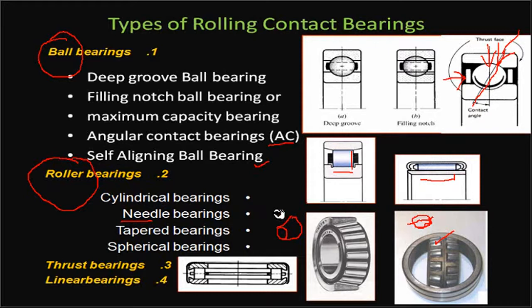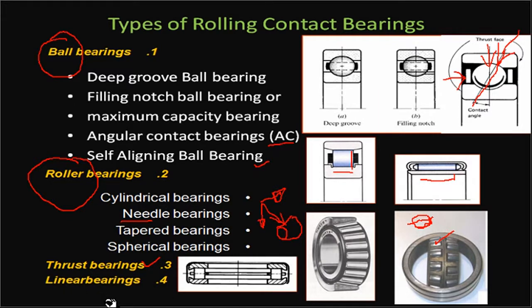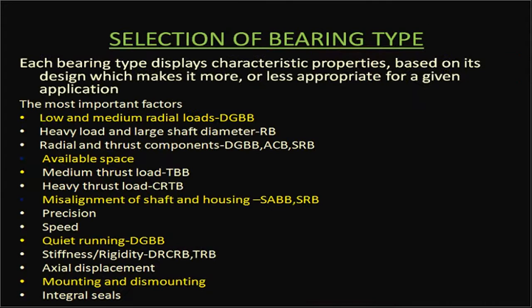The taper roller bearing carries both axial and radial loads because the load acts at an incline due to the taper, producing both a radial force component and an axial force component. Some bearings are specifically designed to carry only axial loads — these are called thrust bearings. Linear bearings are used in machine tool tables, such as lathe or milling machines, where the table slides forward and backward; rollers are used in linear bearings for smooth motion.